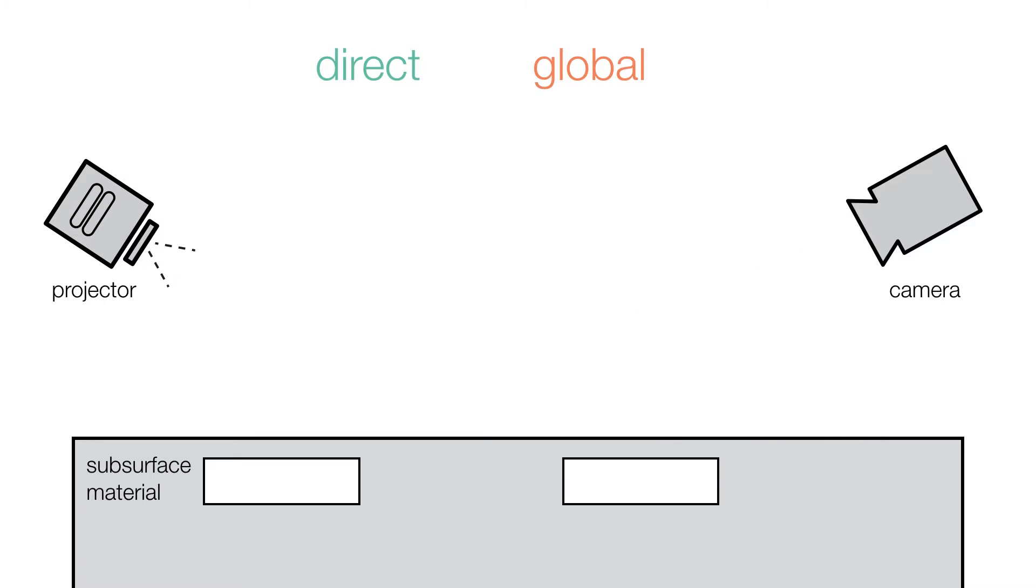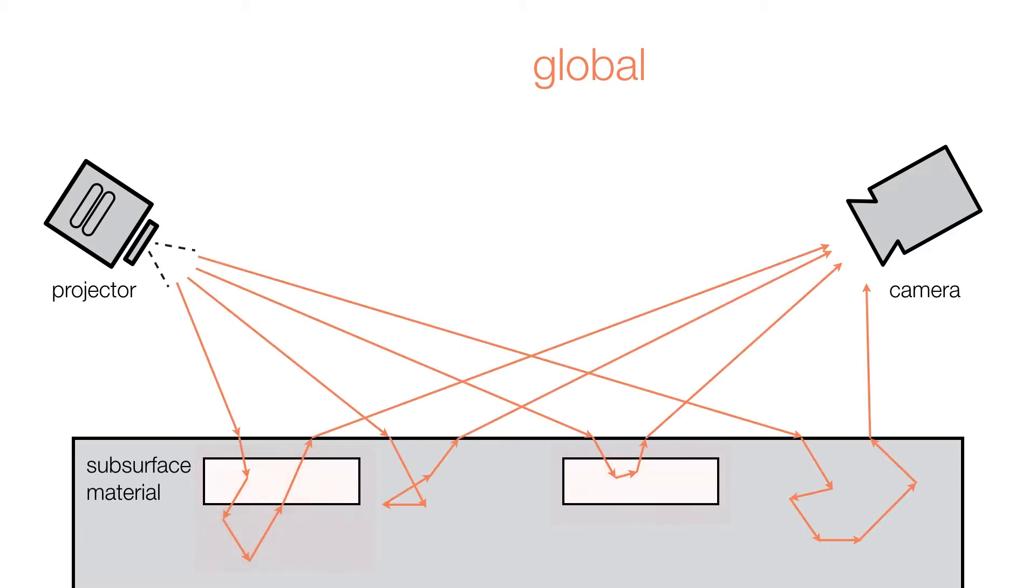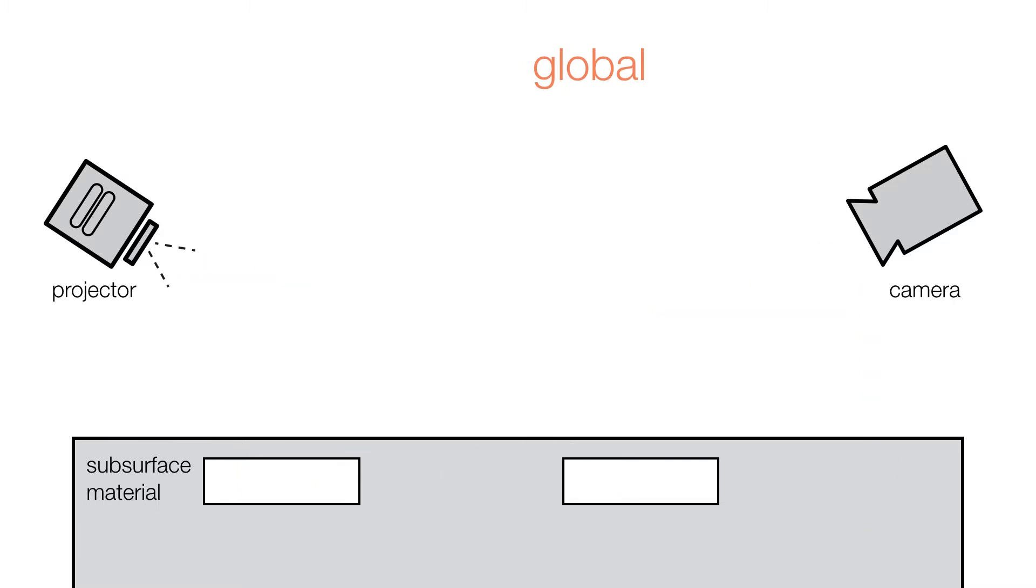When the material structure under the surface changes, the direct component is unaffected since it is composed of light rays reflected by the surface, but the scattering rays inside the object will be affected, resulting in a different global component. We manipulate the global component by simply placing air pockets under the surface and thereby tag the fabricated object with user-specified information.